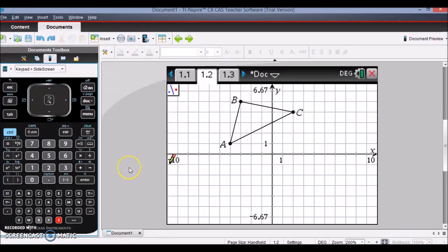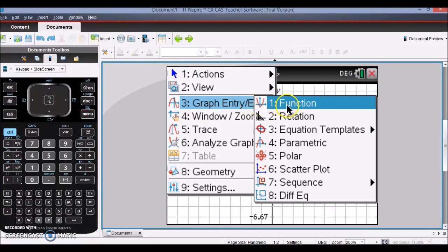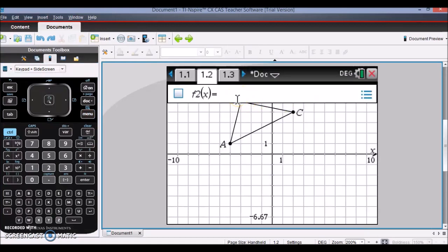But if you're not familiar or unsure about where the graph of that line would be, you can go to Menu, Graph, and Function, and type in the function that you want. So I'm going to use y equals x.